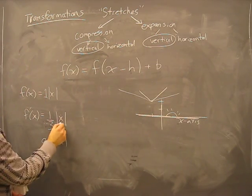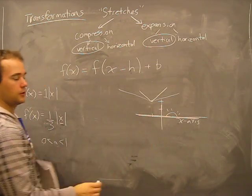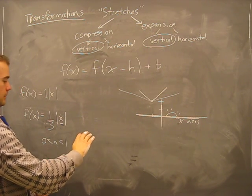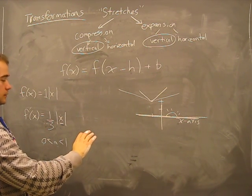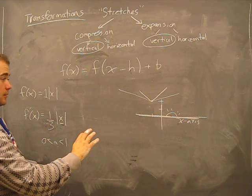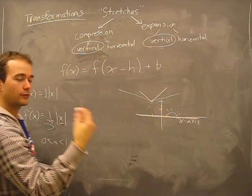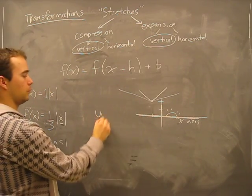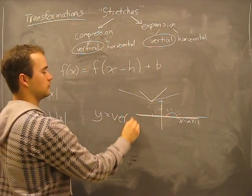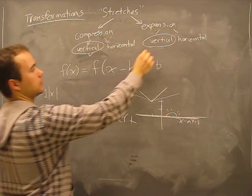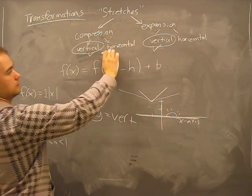First of all, are we messing with x? No. So therefore... Okay, we just had a mind blank for a second. We're not messing with x, therefore we are messing with y. Y deals with vertical. So therefore we know it's either this one or this one.